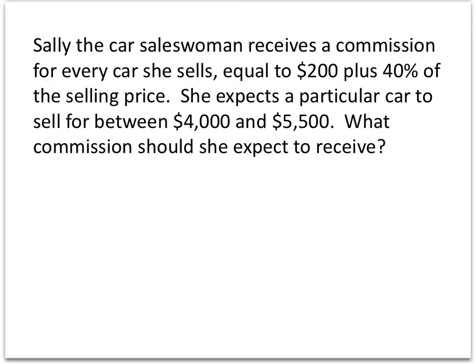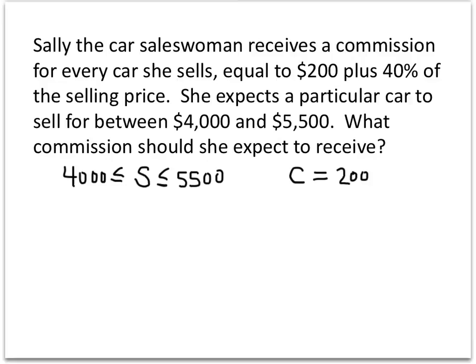Now let's tackle a word problem. Sally the car saleswoman receives a commission for every car she sells equal to $200 plus 40% of the selling price. She expects a particular car to sell for between $4,000 and $5,500. What commission should she expect to receive? We know the sales price S is between $4,000 and $5,500, and the commission C equals $200 plus 0.4 times S.